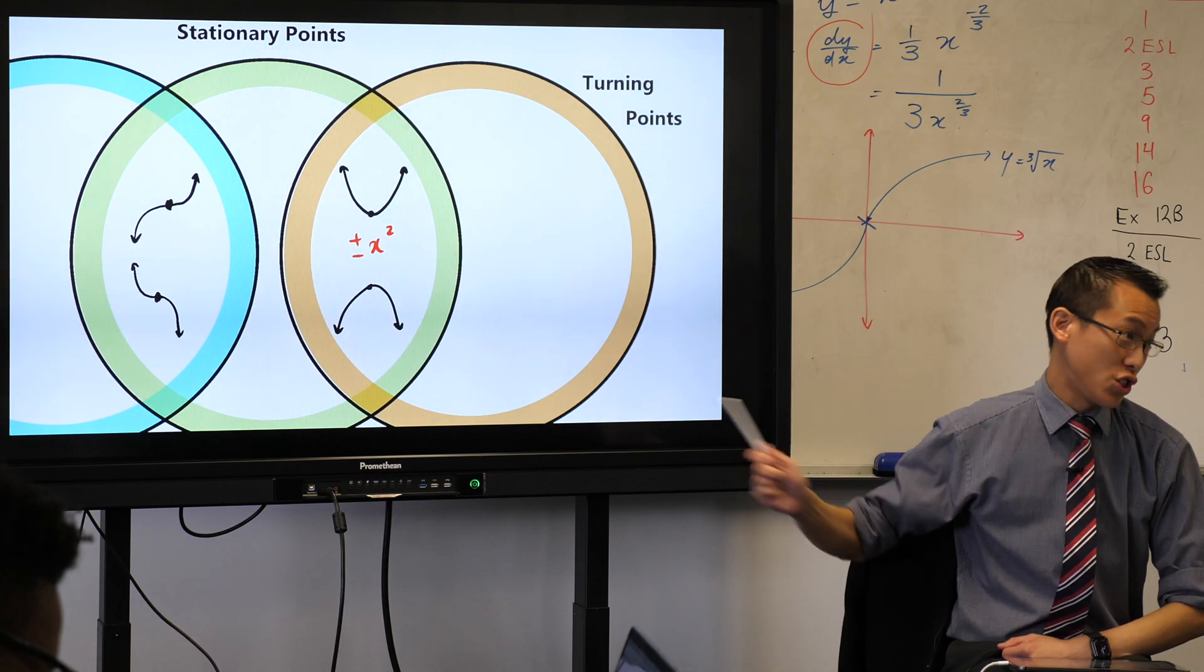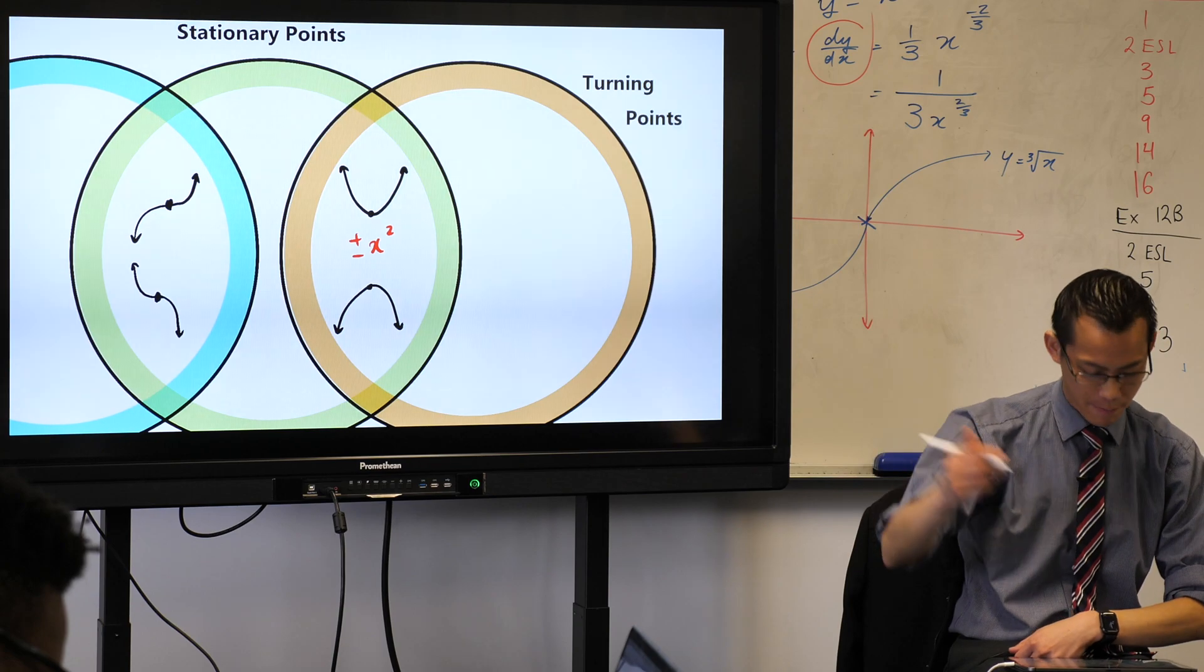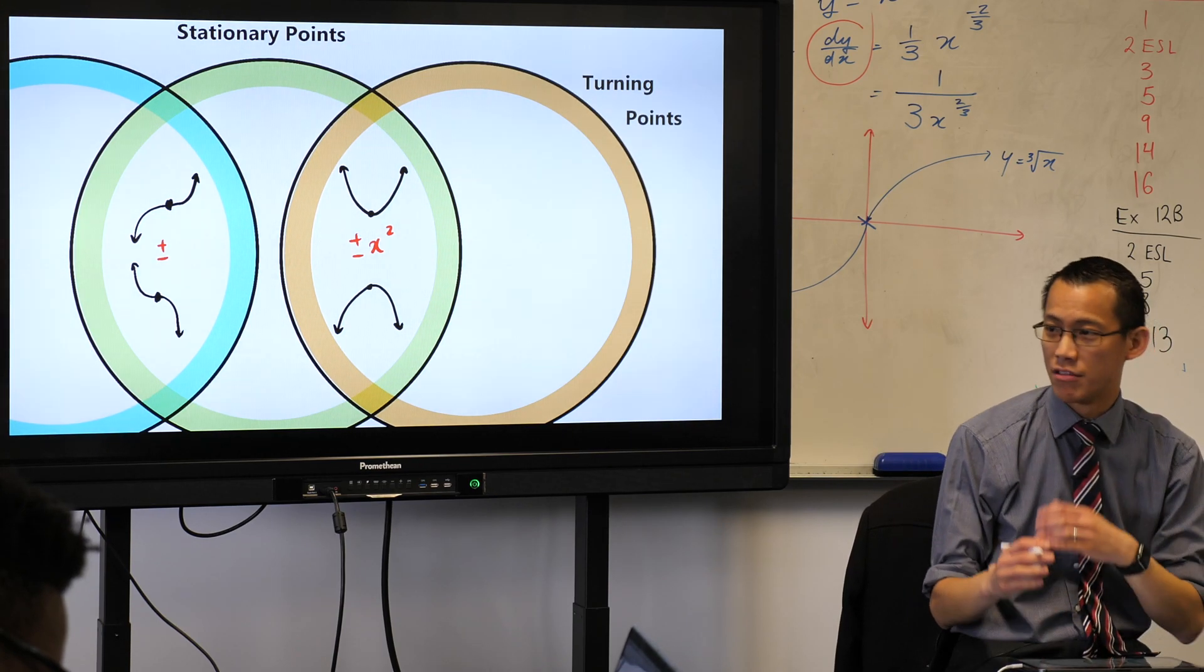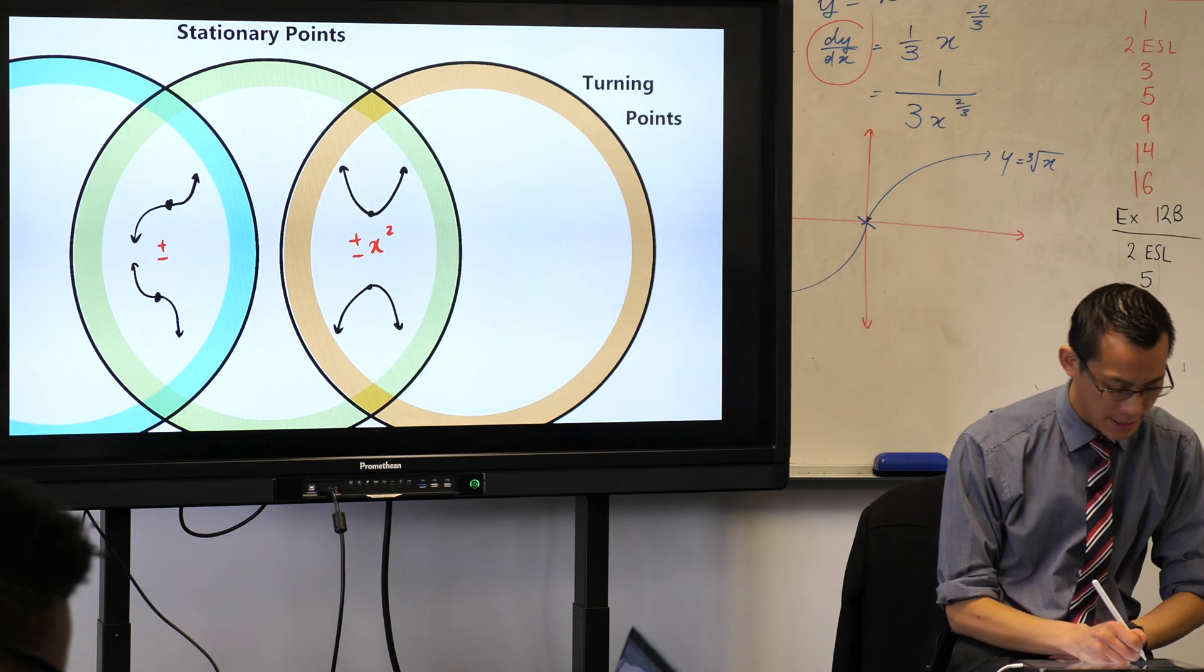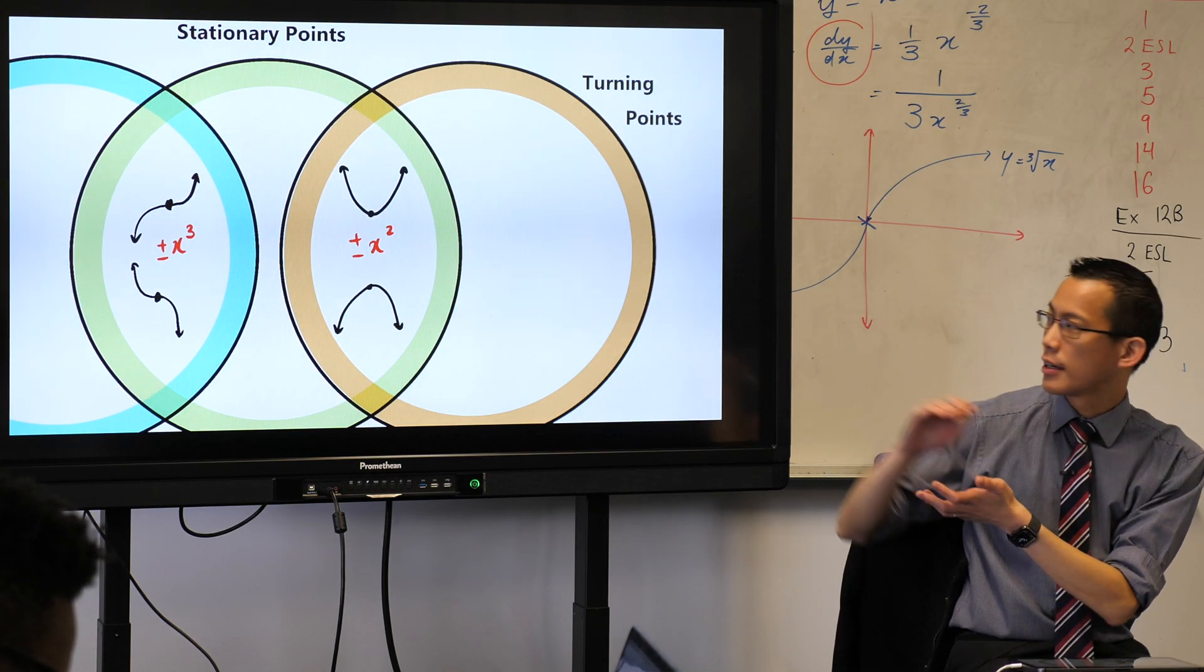So these guys here are not turning points. They are still stationary points, so that's why they're in this inner circle here. And just again, Saran pointed out, as an example of it, this is not the only time that it happens, but as an example, x cubed, or minus x cubed, will give you this kind of shape.